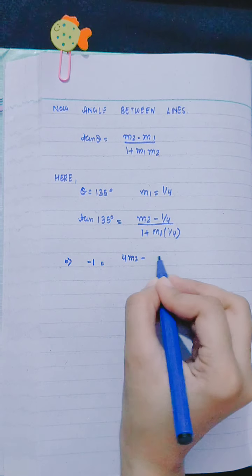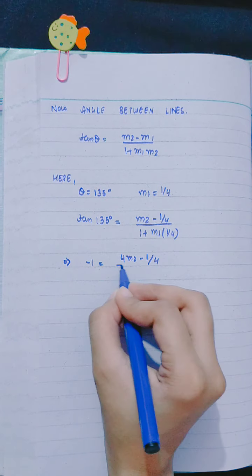Here, we have -1 equals m2 minus 1/4 divided by 1 plus m2/4.